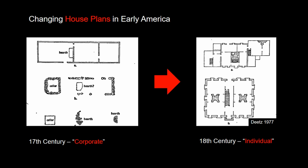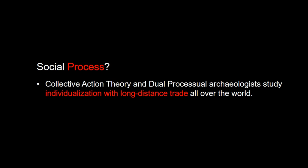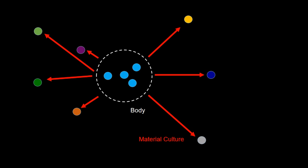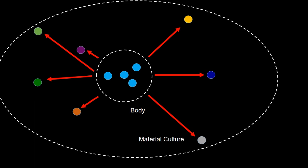But this doesn't just happen in the West. Dual processual and collective action theory archaeologists observe these kinds of patterns all over the world, so it may not be an idiosyncratic Western trait, but might actually be part of social process. This is because of how long-distance connections are mediated. Through their body, a person can easily interact with people nearby and form a group. However, to interact with people far away, the body can't communicate that far on its own, so those interactions take place through objects and material culture. This may still form some sort of imagined community, but lives are now defined by alienation and individualism because the immediate experiences are with objects instead of actual people.